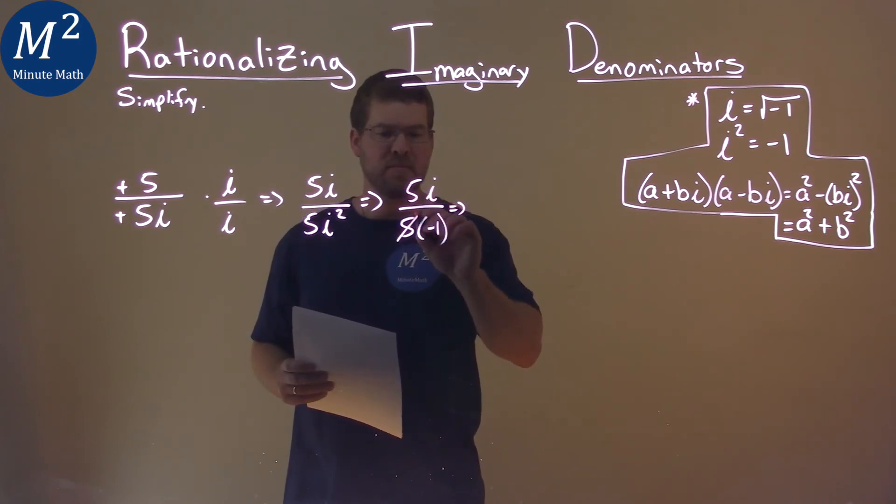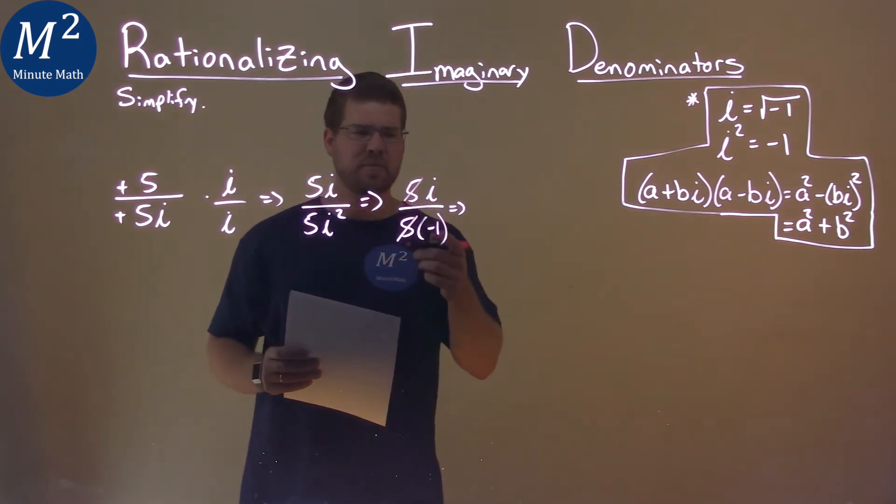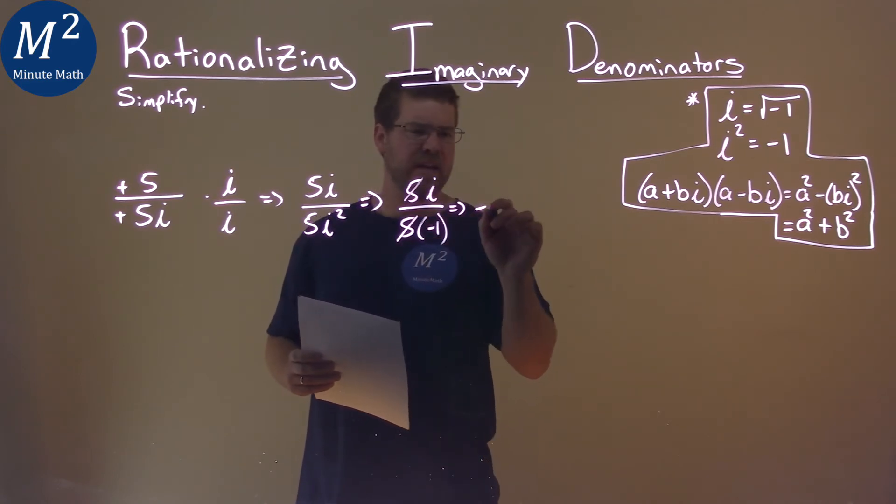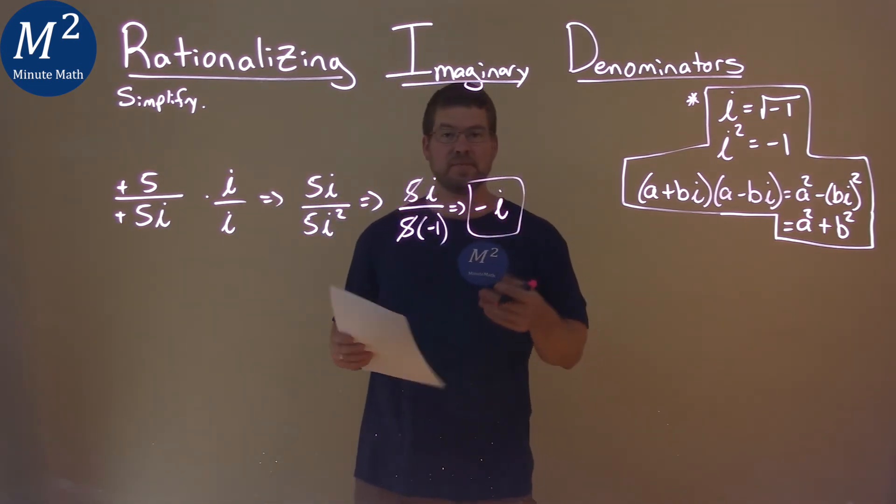5s cancel, right? Cancel each other out. And we're left with just i over negative 1, which is just negative i. And so our final answer here is just negative i.